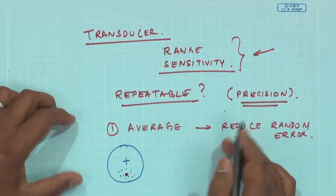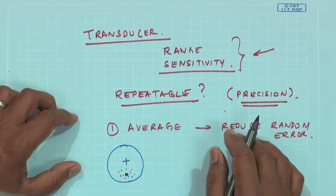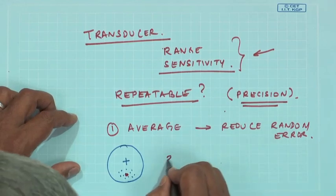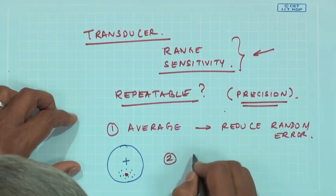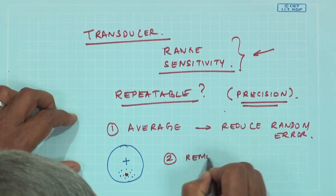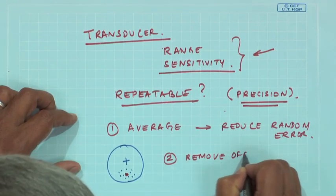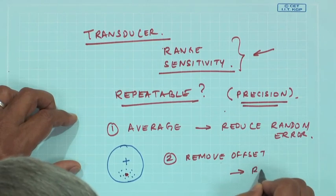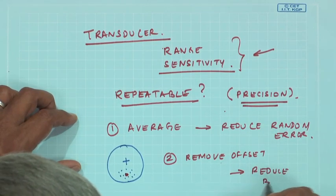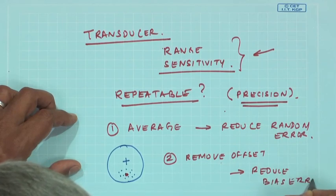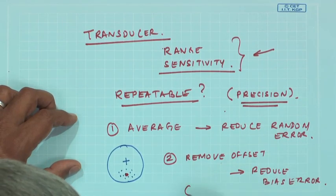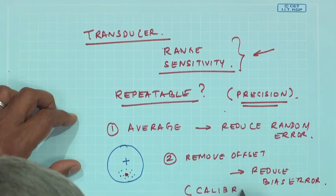In the next one, to bias error we can remove the offset to reduce the bias error. And this is actually done by what is known as calibration. We will talk about calibration in just a little while. By calibration we can remove the bias error.